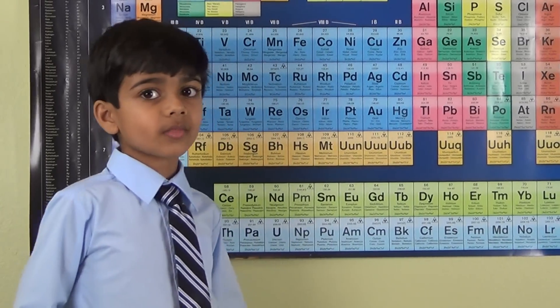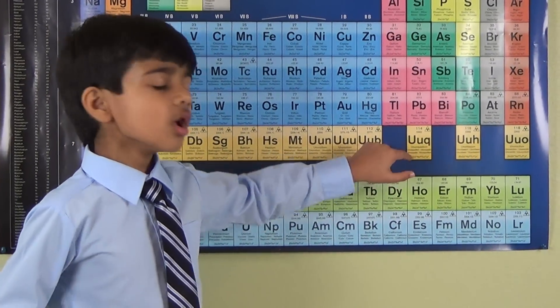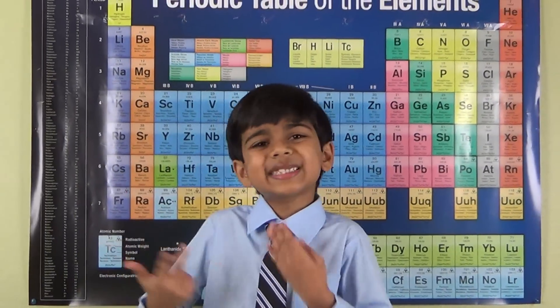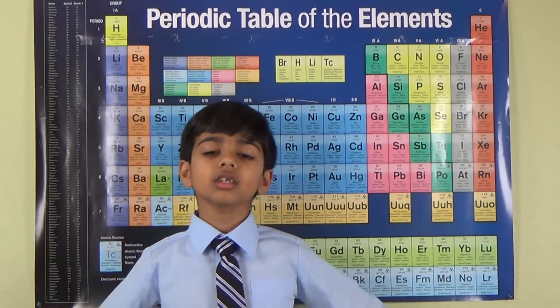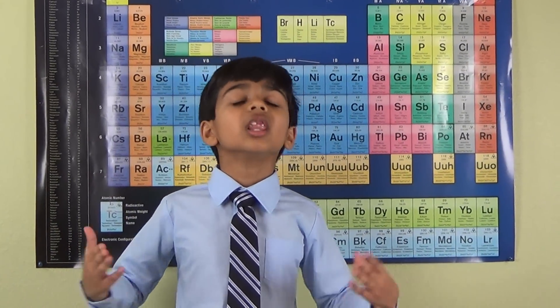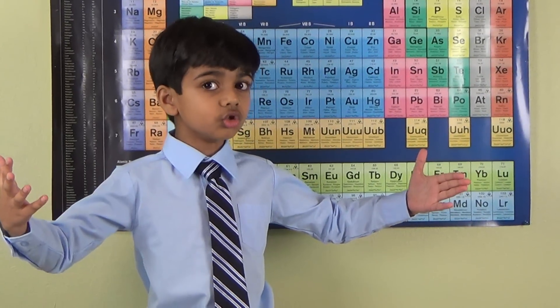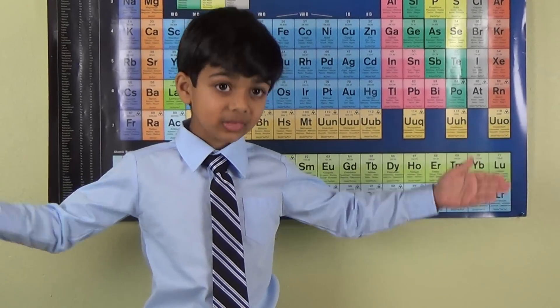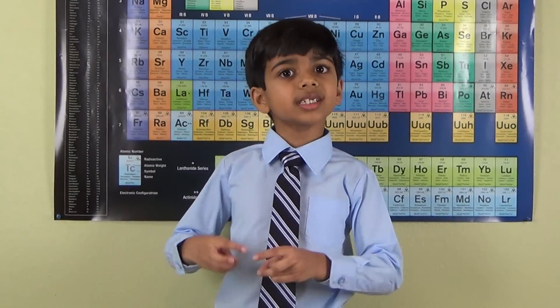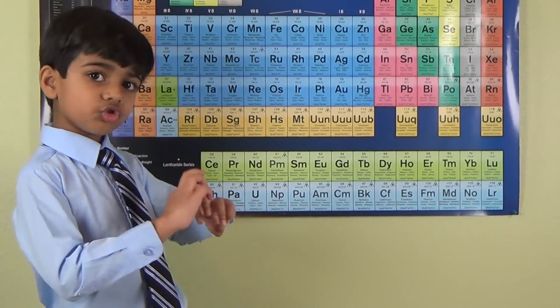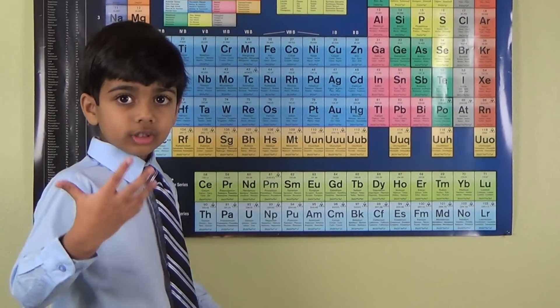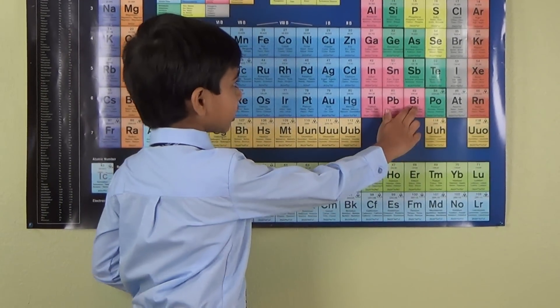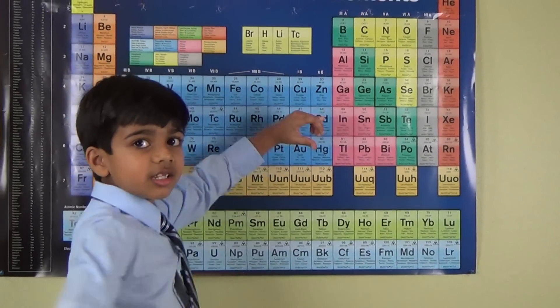The first element, or element 113, is called Nihonium. This was synthesized by Japanese scientists, which is where the 'Nihon' part of Nihonium comes from. Nihon in Japanese means 'land of the rising sun,' a reference to Japan. The Japanese scientists created Nihonium by colliding bismuth ions with a beam of zinc ions.